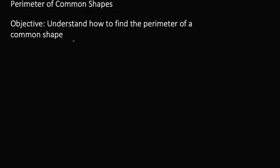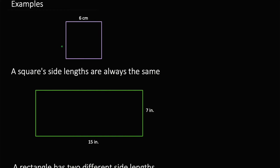Our objective is to understand how to find the perimeter of a common shape. What does that mean? The perimeter is basically the outside.